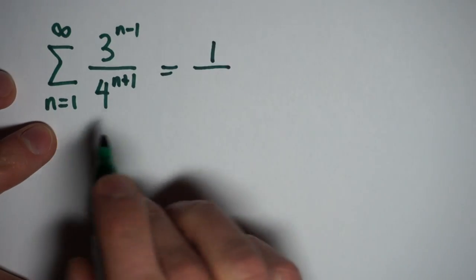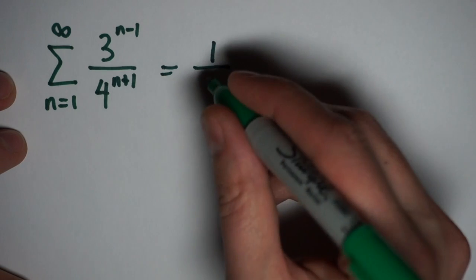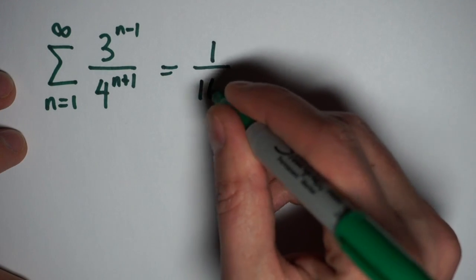So when n equals 1, I'm working with 3 to the 0 over 4 to the 2, which is 1 over 16.